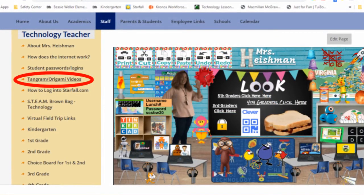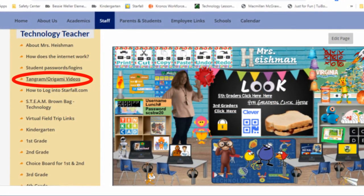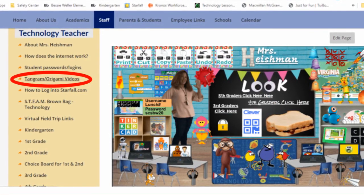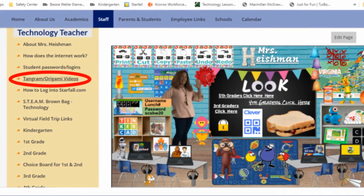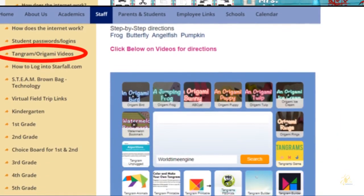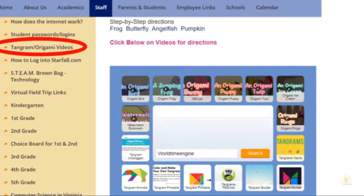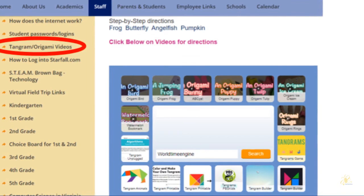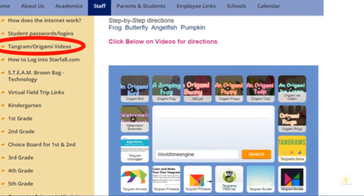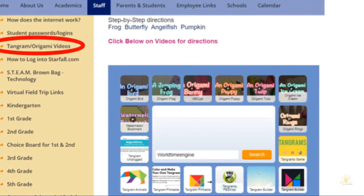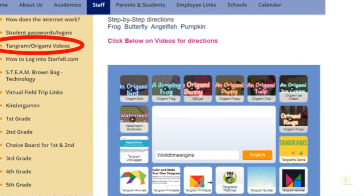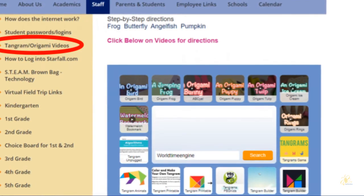Navigate to Mrs. Heisman's web page. There you can click on the link that says tangrams and origami videos. Once you're here on the tangram and origami videos link, you will see a variety of online interactive games or how-to videos. If you need any step-by-step directions, you will also find them here.